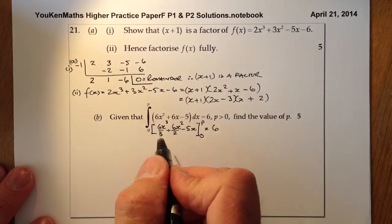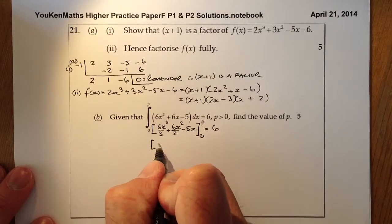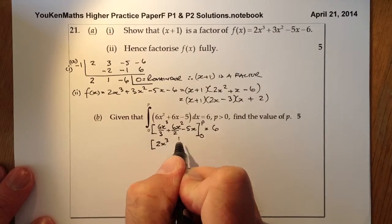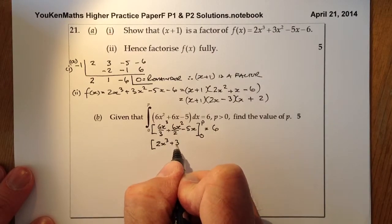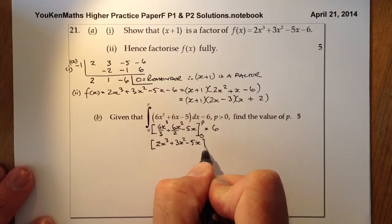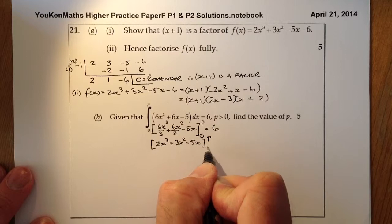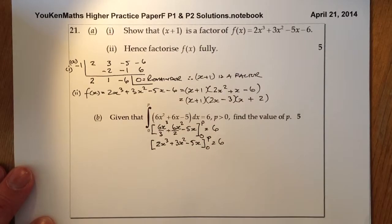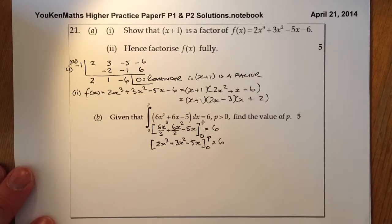I'll just tidy that up. That's going to be 2x³ + 3x² - 5x with the limits p, 0, and that equals 6.